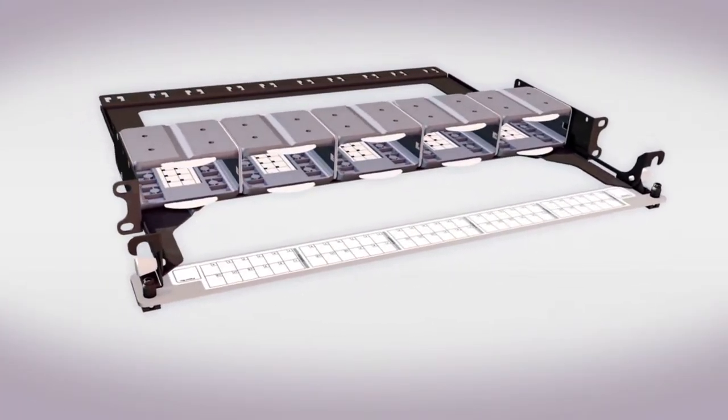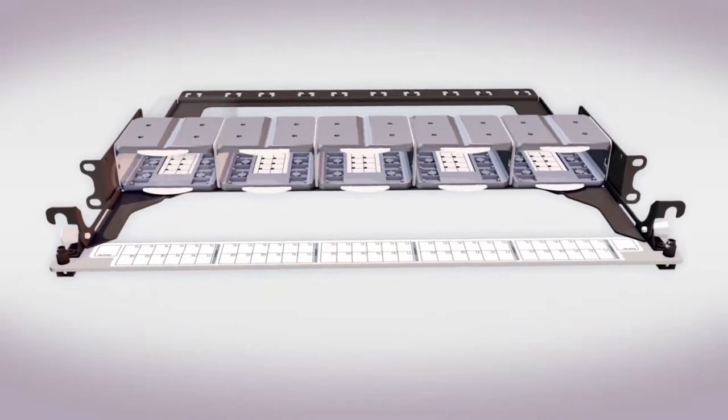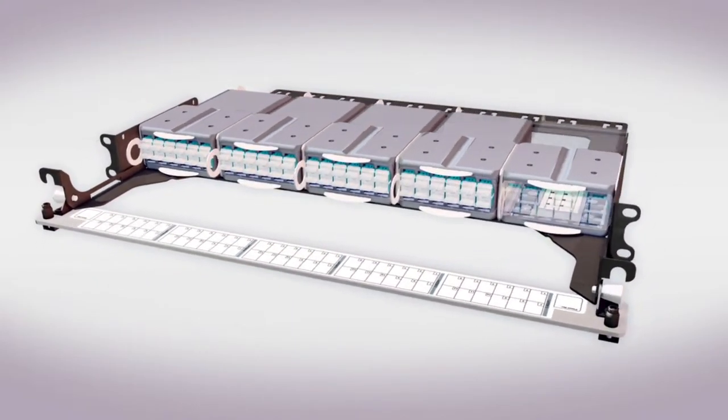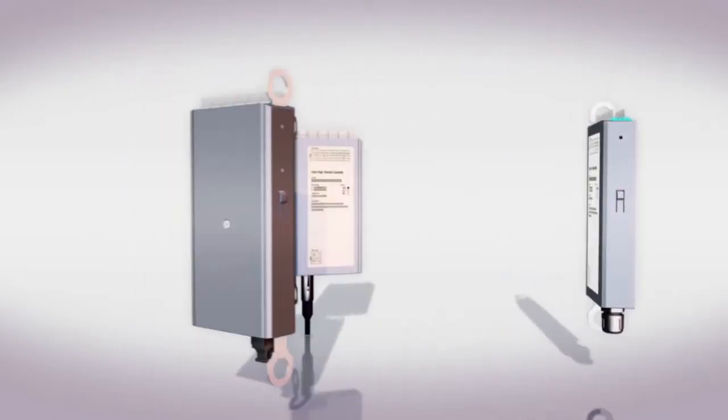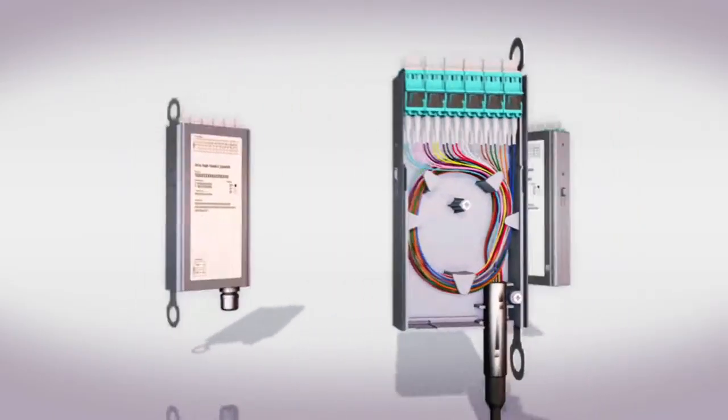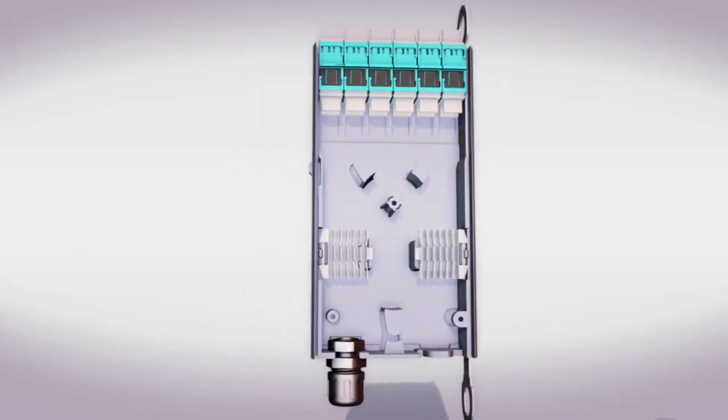Modular by design, the FirstLight ultra-high density solution enables near-instant fiber port growth when required. Using the extensive range of tested and certified pre-terminated modules ensures network design flexibility.